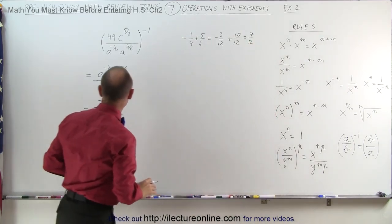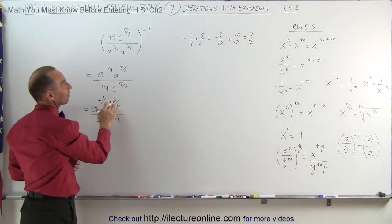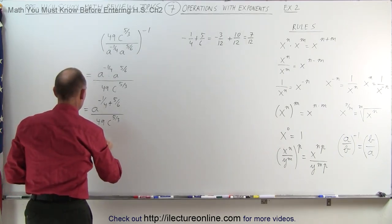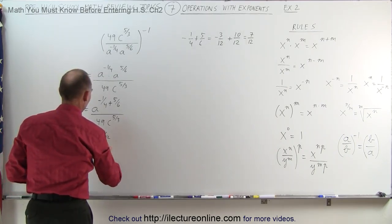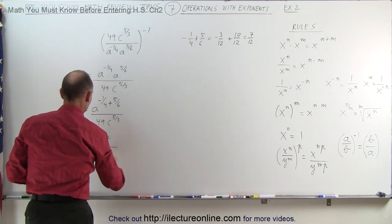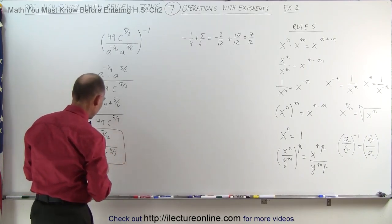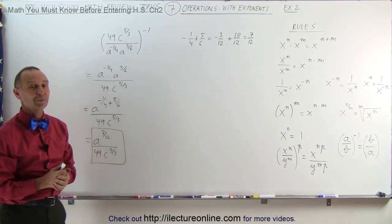In other words, the exponent minus 1 fourth plus 5 sixths can be written as 7 twelfths. So this is equal to a to the 7 twelfths divided by 49 c to the 5 over 3. And that would be the final form of the answer for that particular expression.